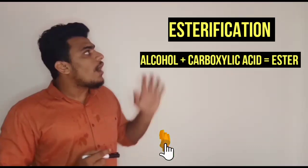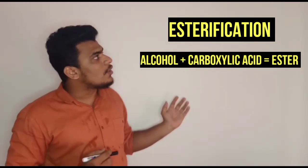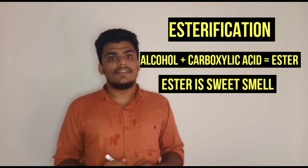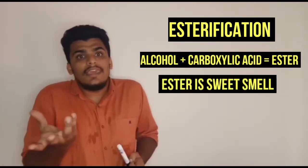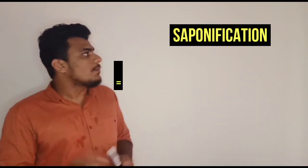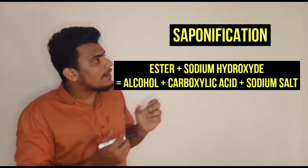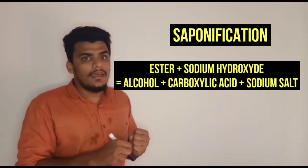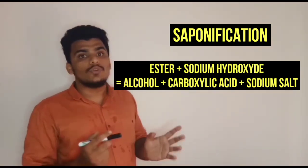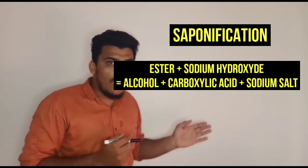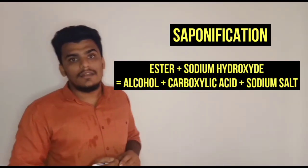Now let's learn about esterification and saponification. An ester is formed by the reaction of an alcohol and a carboxylic acid. For example, ethanol reacts with ethanoic acid to produce an ester, which has a very sweet smell — that is why esters are used as flavoring agents and in perfumes. Saponification is the reverse of esterification: by adding sodium hydroxide to an ester, you obtain alcohol and carboxylic acid along with sodium salt. Long-chain sodium and potassium salts are used to make soap.